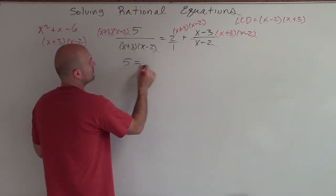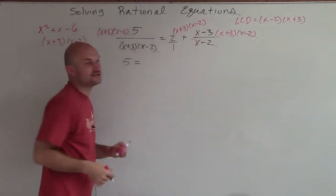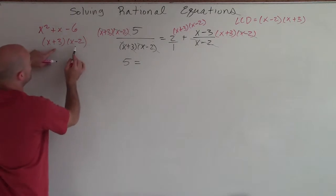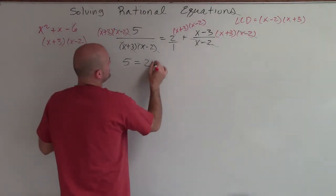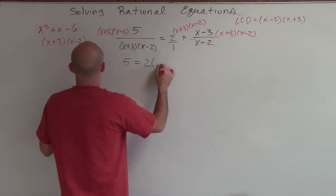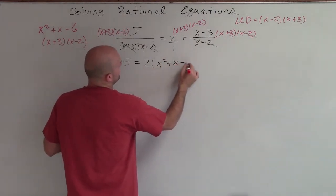So therefore, I'm left with 5 equals. Now, I just have x plus 3 times x minus 2. We know that can be multiplied back over to give us this trinomial. So I'm actually going to expand this to x squared plus x minus 6.